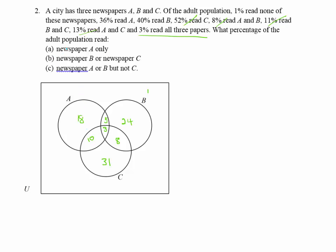How many people read newspaper A only? That's 18%. For newspaper B or C: everything together is 100%, take away 1% who read nothing and 18% who read A only, and that gives everyone else remaining — that's an easier approach than adding all the individual regions.